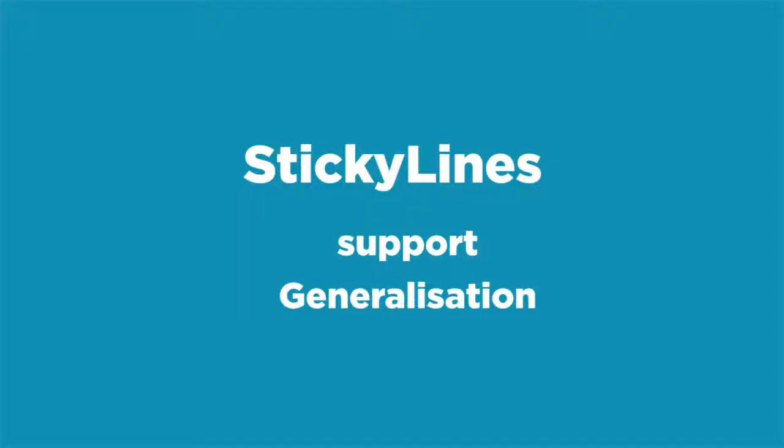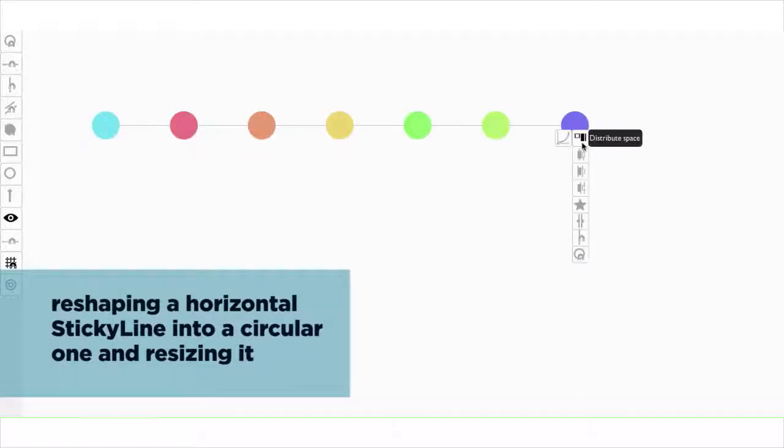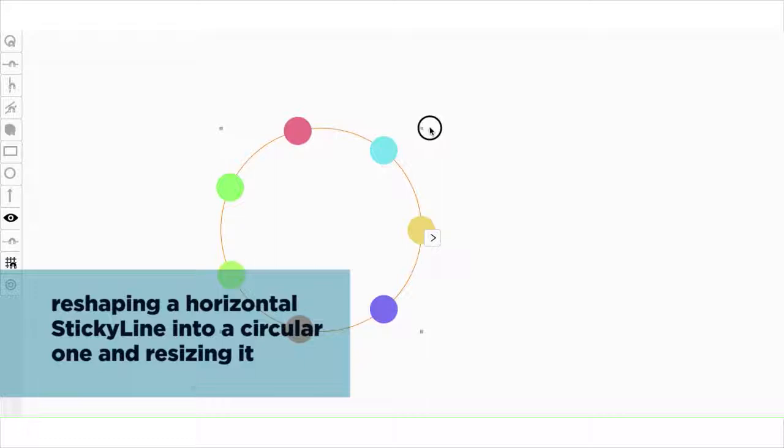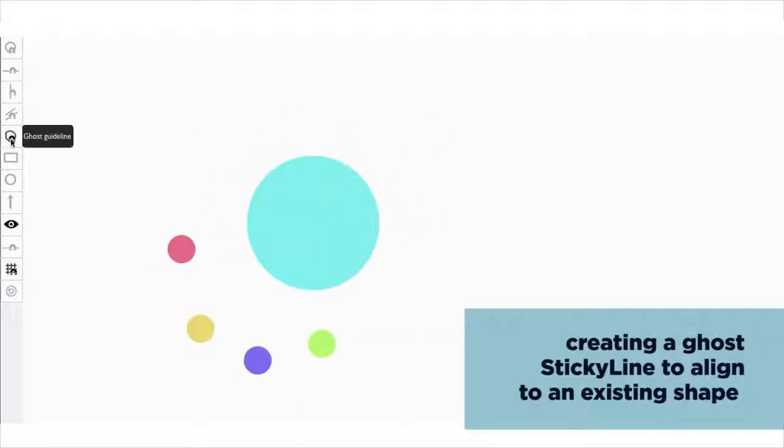Sticky lines support generalization. Users can reshape a horizontal sticky line into a circular one, and resize it. They can also create a ghost sticky line to align objects at a fixed distance from an existing shape.